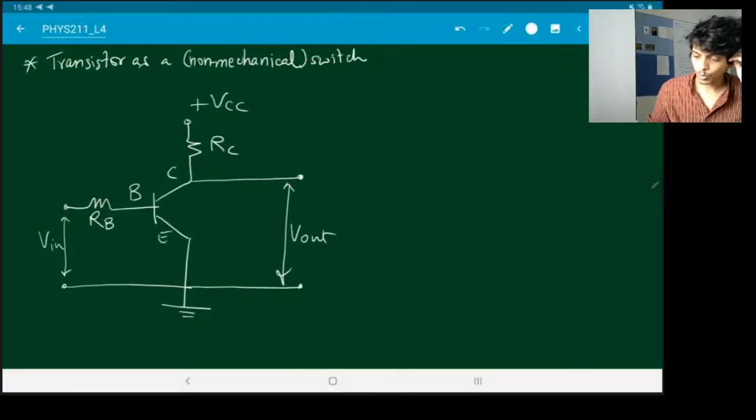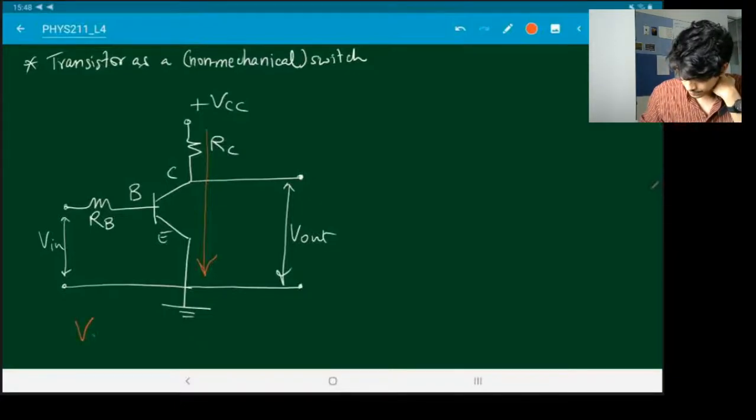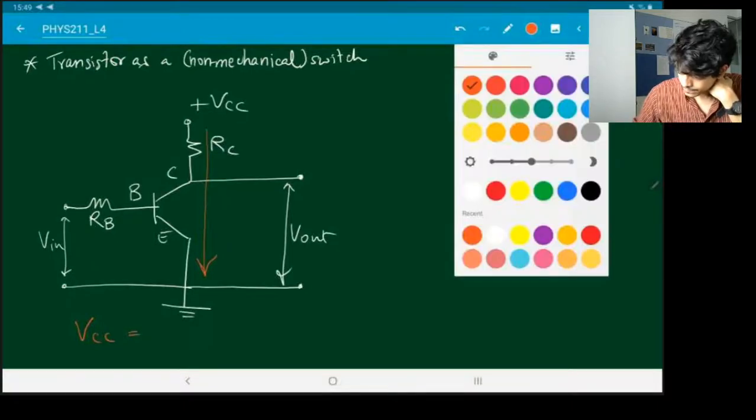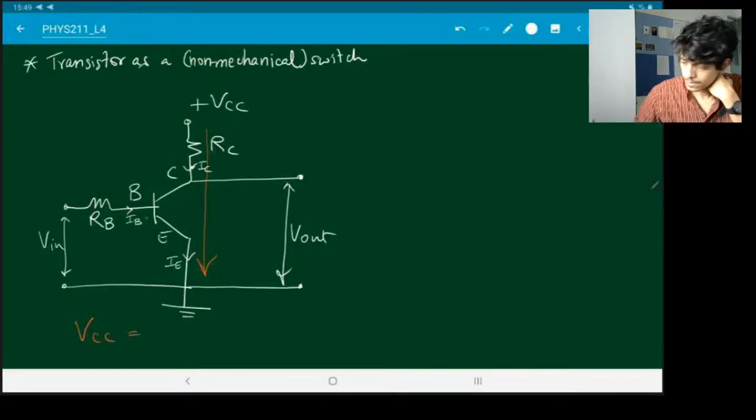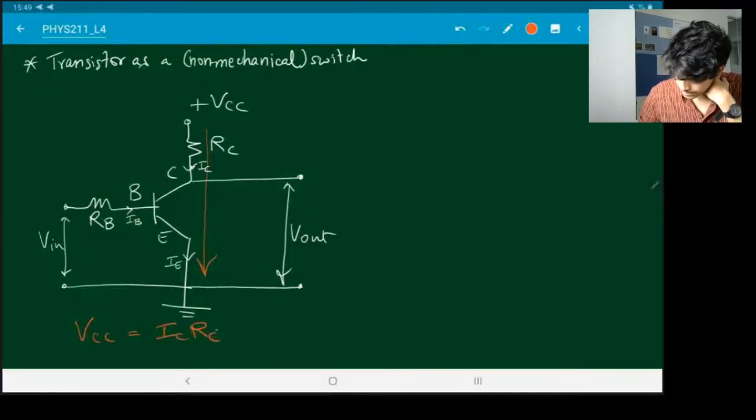How should we write the DC load line for this equation? Once again, look at this line over here from Vcc to ground and apply Kirchhoff's voltage law over there. So Vcc is equal to, if I mark the currents, this is Ic, this is Ie, and this is Ib. Then Vcc is Ic Rc, that's the potential drop across this resistance Rc, plus Vce, that's the potential drop between the collector and the emitter. So this is the DC load line equation.